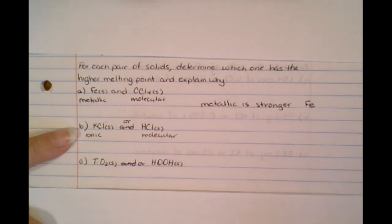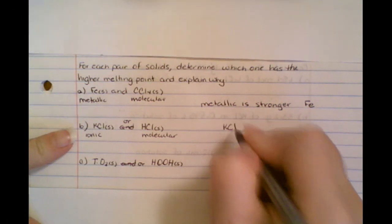So now which is stronger, an ionic bond or a molecular bond? An ionic bond is stronger. So if an ionic bond is stronger, then KCl is our answer.